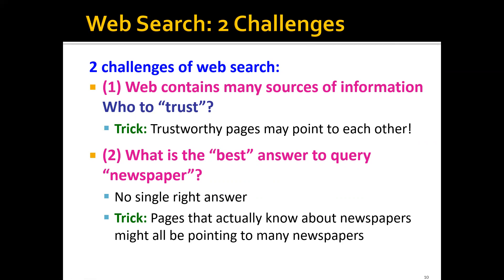So we have two challenges of web search. The first is that the web contains many sources of information and it's very difficult to decide who to trust — basically how to avoid web spam and fake or plagiarized pages. One trick is that trustworthy pages tend to point to each other, which is something we'll discuss in the PageRank method. The second challenge is: what's the best answer to a query, for example 'newspaper'? There's no single right answer, but pages that know about newspapers might all be pointing to many newspapers, so we can use the structure of links to determine the importance of web pages.